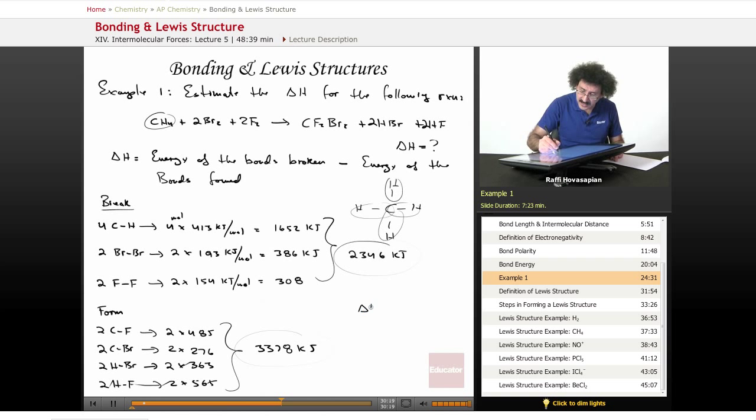Negative delta H, this is an exothermic reaction. When methane, bromine, fluorine come together to form CF2Br2 and two molecules of hydrobromic acid, two molecules of hydrofluoric acid, energy is released. 1,032 kilojoules per every mole of methane that reacts. Highly exothermic. That's it.